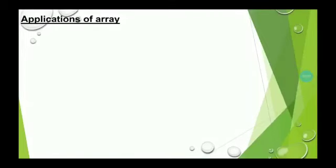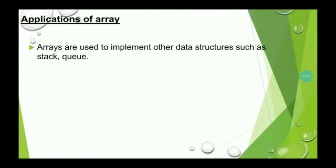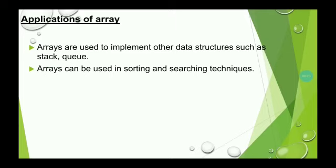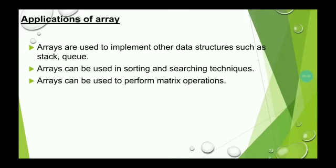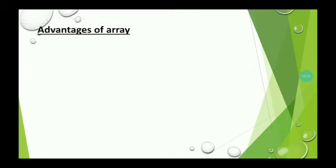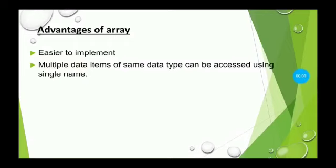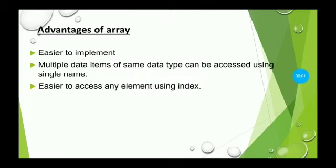Next, we will see some applications of arrays. Arrays are used to implement other data structures such as stacks and queues — stack and queue are not separate data structures, so they must be implemented using arrays. Arrays can be used in various sorting and searching techniques. They are also used to perform various matrix operations. The advantages of arrays are: arrays are easier to implement — we can easily declare, initialize, and perform various operations. Multiple data items of the same data type can be accessed using a single name, thereby reducing the need to declare a separate variable for each data item. It is also easier to access any element using its index value.